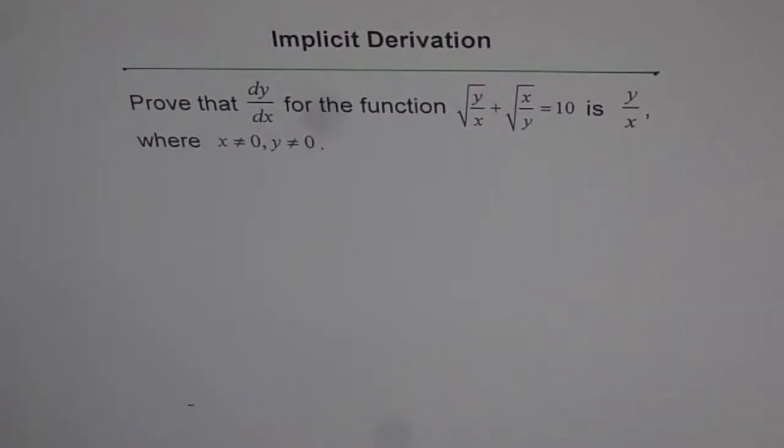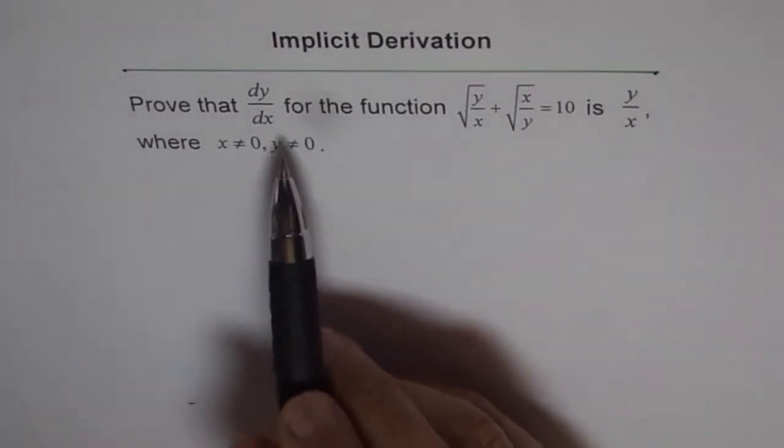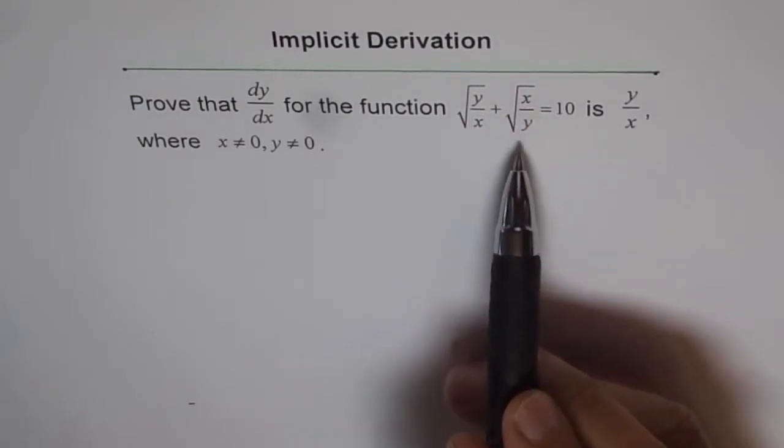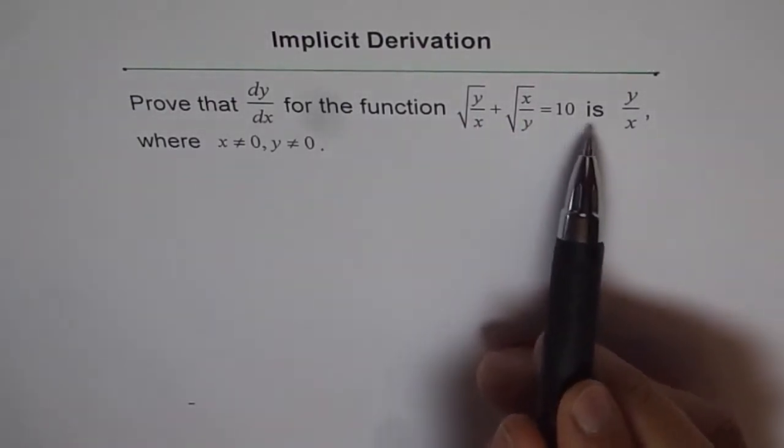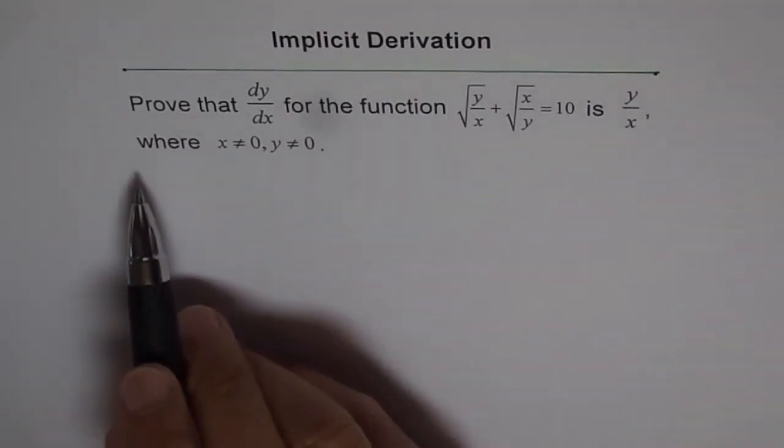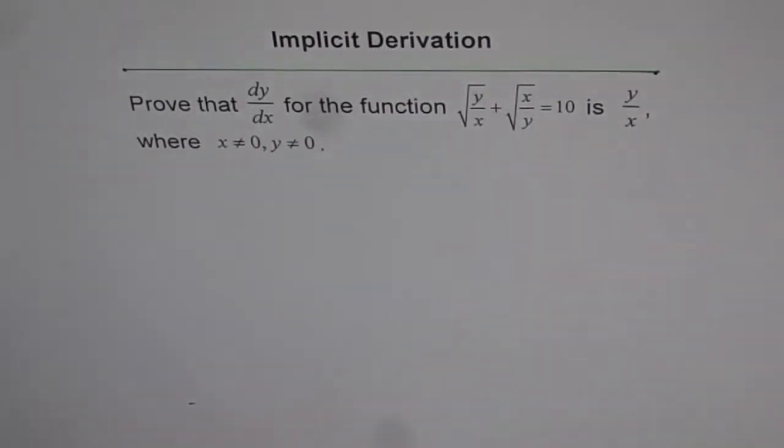Implicit derivation. Here we have a tough problem. The problem is, prove that dy/dx for the function √(y/x) + √(x/y) = 10 is y/x, where x and y are not equal to 0. So that is what the question before us.